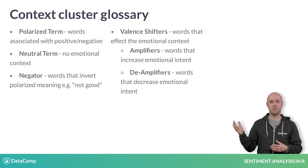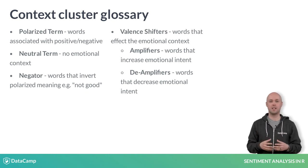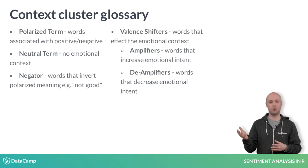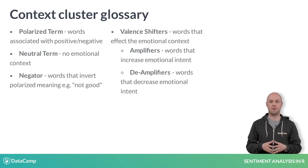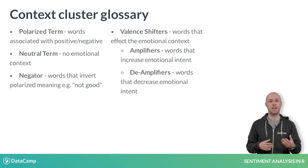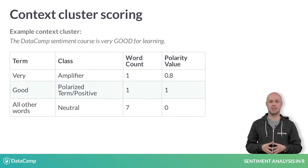As a quick review, here are the terms we covered. Once polarity has created a context cluster, it classifies terms into each of these types: polarized, neutral, negators, and valence shifters. As you may expect, a positive word has a value of 1, and a negative term has a value of –1. This context cluster does not have a negation, so we don't have to switch any values.